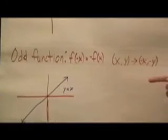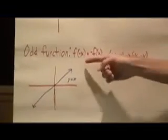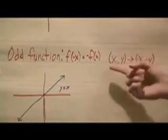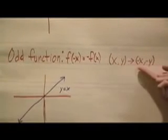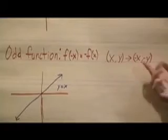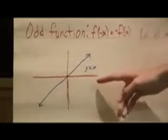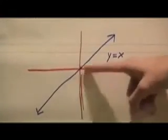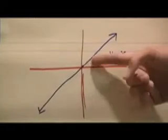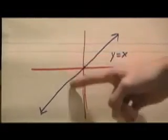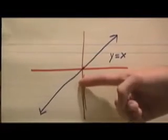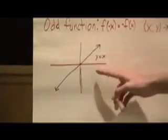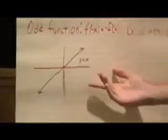Odd functions are defined as f of negative x equals negative f of x. That means for every point x, y you have, you have another point that's the complete opposite — it's flipped over both the x and the y-axis. For y equals x, you just have a line. So if you have a point like (1, 1), you flip it 180 degrees and you have (negative 1, negative 1). It's the same line — if you flip this function 180 degrees, you still have the same function.